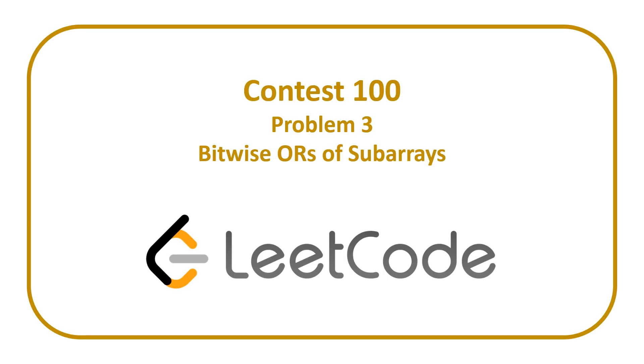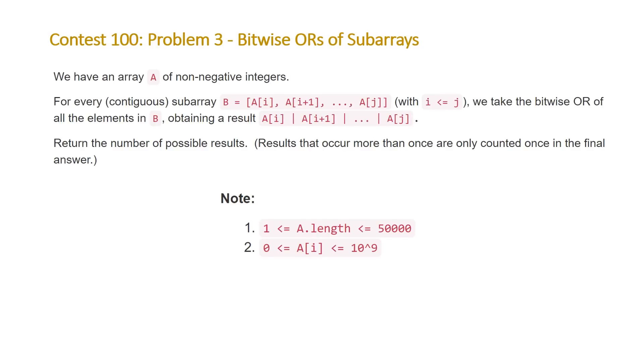In today's video, we're going to be covering problem 3 from LeetCode Contest 100 entitled Bitwise ORs of Subarrays. The problem states we have an array A of non-negative integers. For every contiguous subarray, we take the bitwise OR of all the elements, obtaining a result A[i] bitwise or A[i+1] all the way to bitwise or A[j]. The question is asking us to return the number of unique possible results. Note that for this problem, the length of our array is going to be between 1 and 50,000, and the values in our elements are going to be between 0 and 10 to the 9th.